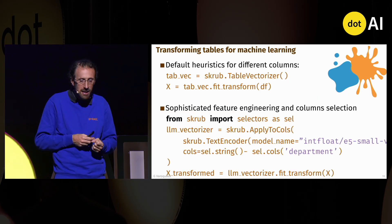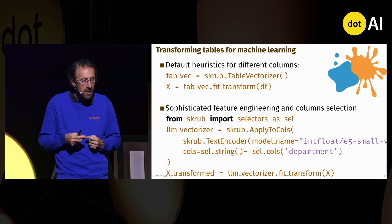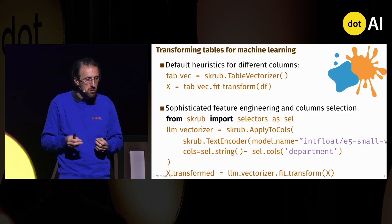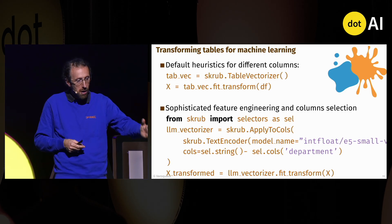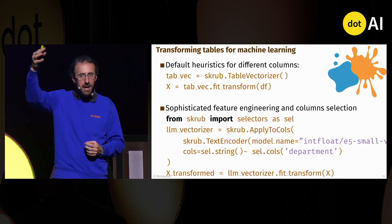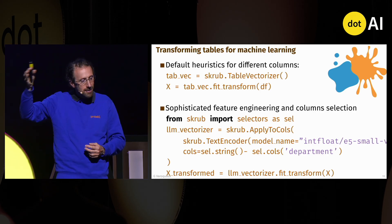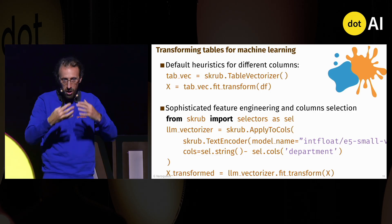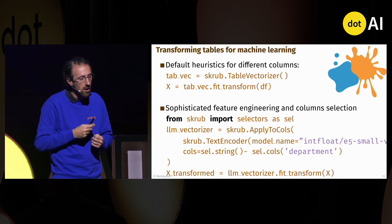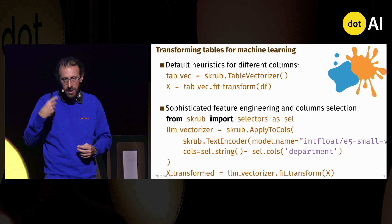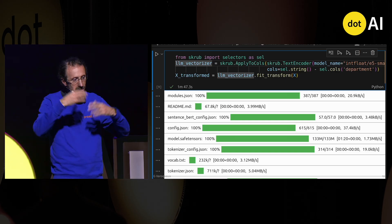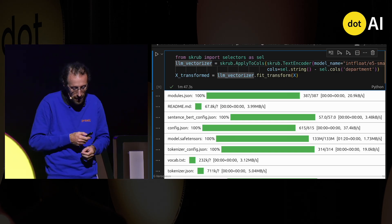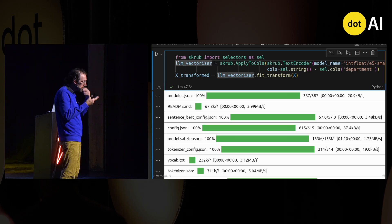I can have more sophisticated feature engineering. Skrub gives me tools to, for instance, select a bunch of columns — here I'm selecting all the string columns except the department column — and then apply an LLM downloaded from Hugging Face to encode all those text columns. Then I re-merge everything and apply machine learning on this. If you run this, it does all the downloading and transformation for you, and you can put this in a pipeline and cross-validate it.